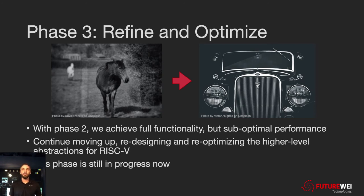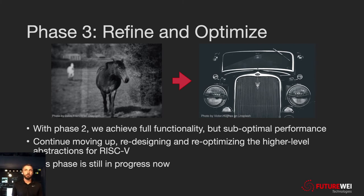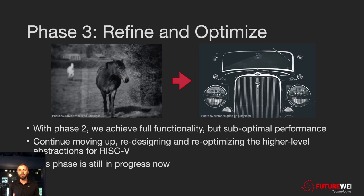The next phase: now we have this functional phase two, but we want to move to a more optimal version — going from the horse to the V8 engine. We basically continue to move up, redesigning and re-optimizing those higher levels of abstraction. It's suboptimal because at the higher levels, there are places still generating what would be an optimal sequence for MIPS but not the optimal sequence for RISC-V. So it's a process to go through and map those to better sequences for RISC-V. This phase is still in progress.